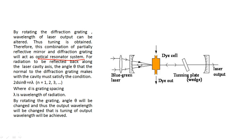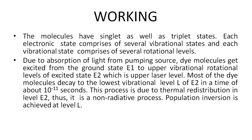For radiation to be reflected back along the laser cavity axis, the angle theta that the normal to the diffraction grating makes with the cavity must satisfy the condition 2d sin θ = nλ. This is the diffraction condition, basically Bragg's law, where d is the grating spacing and λ is the wavelength of radiation. By rotating the grating, angle theta will be changed and thus the output wavelength will be changed — that is, tuning of the output wavelength will be achieved.